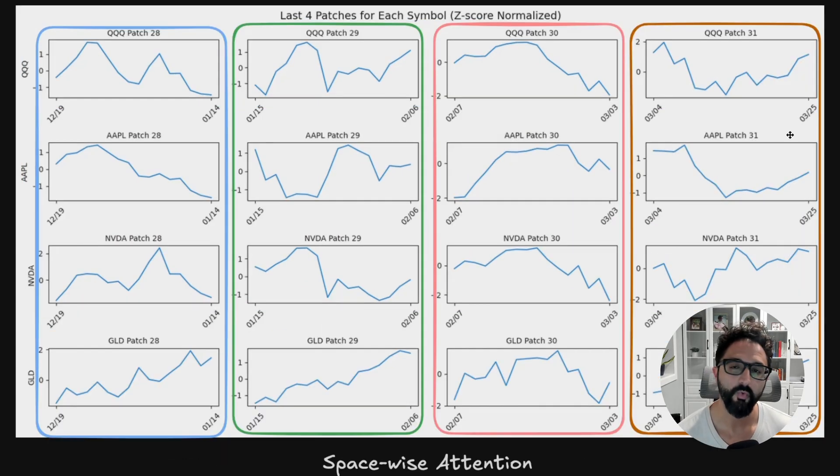On the other hand, spacewise attention will look at multiple variables at a given time step. So this is that same chart above, but now in the spacewise attention layer, we're comparing what happens to Q's, to Apple, to NVIDIA, to Gold, all in the same time step. That gives you different context based on the correlation of multiple time series. It still follows that same general calculation of attention, but it's looking at different shape of your inputs.